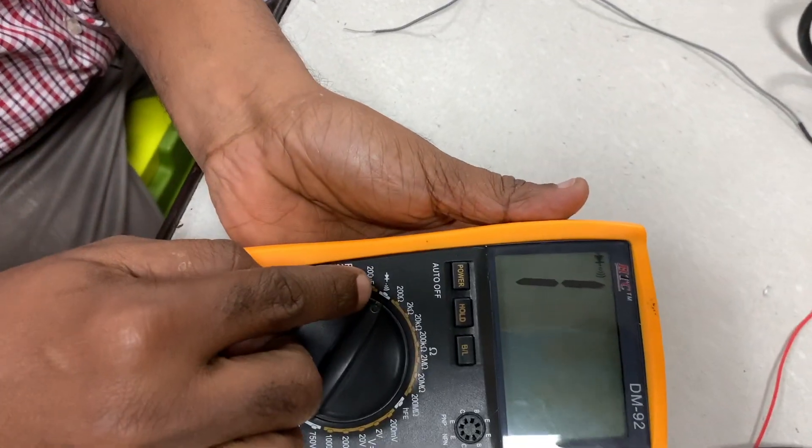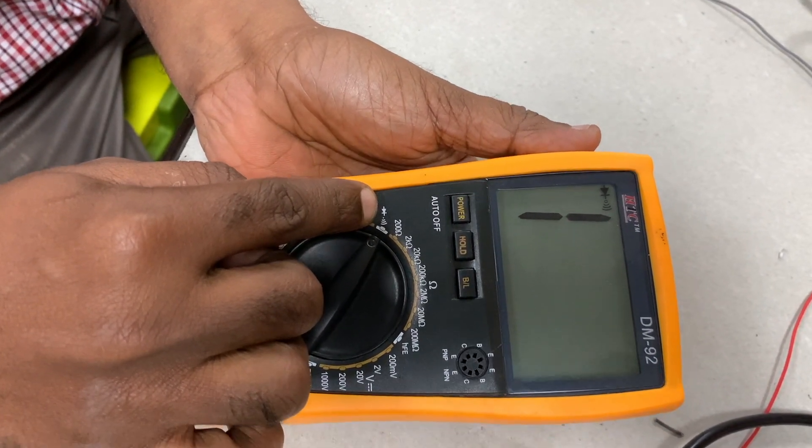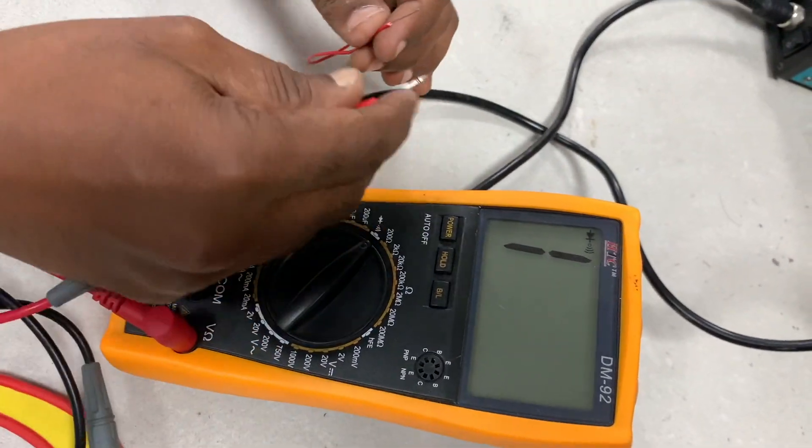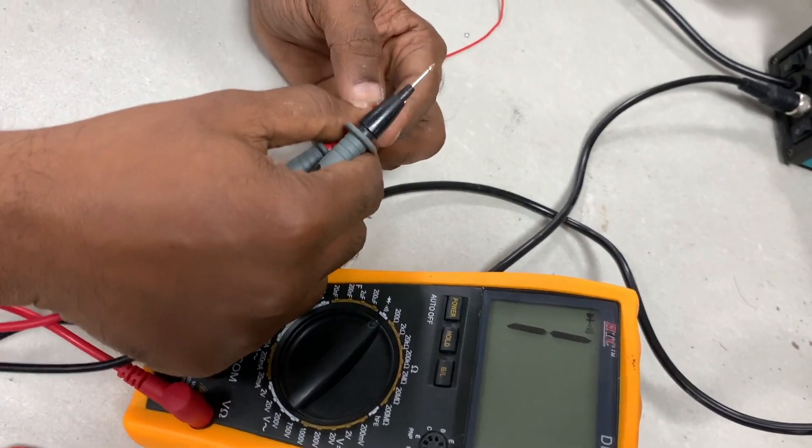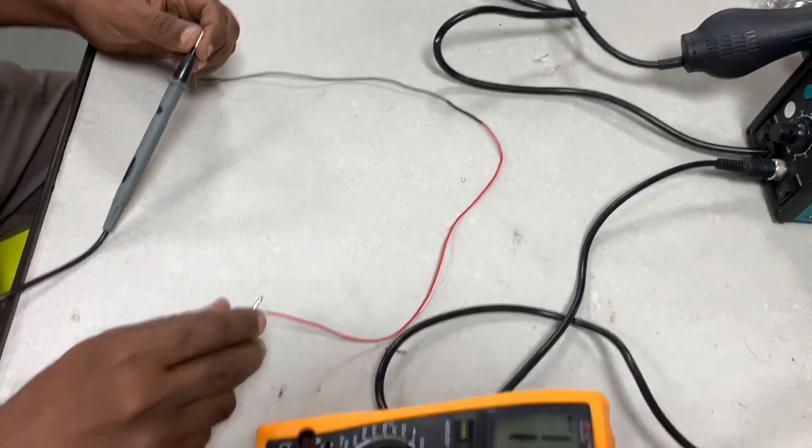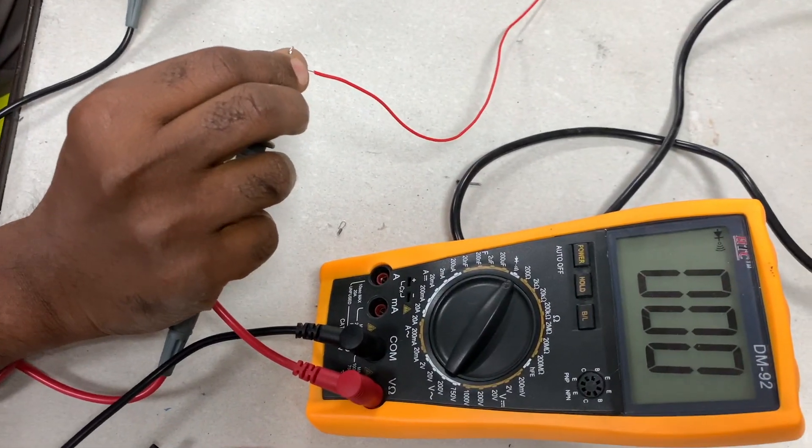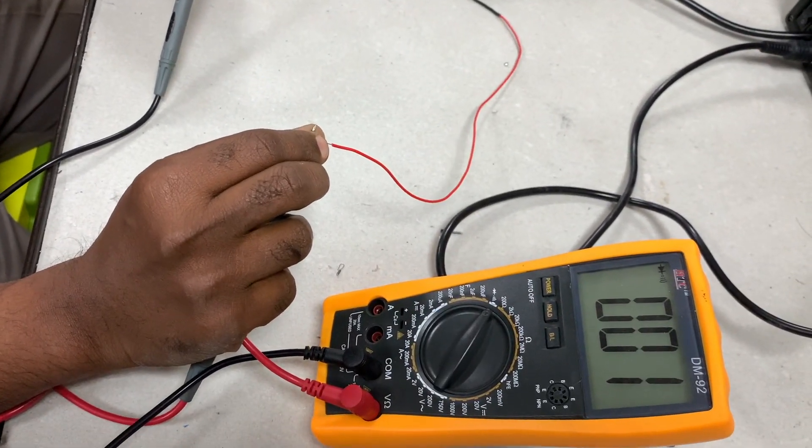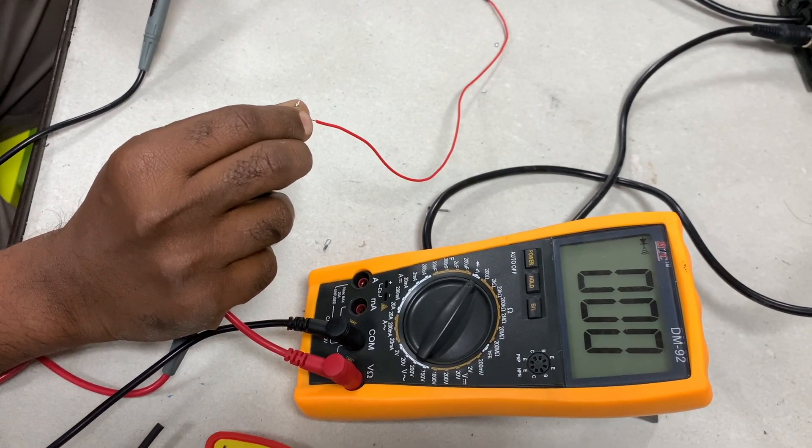I am going to put the multimeter, power it on and put it in the continuity diode mode. It has to make sound in case this is continuous. So one probe, I touch it here. Another probe, I touch here. So you can hear the sound. It means that the joint has been made. And well, it's now a single strand of wire instead of two separate pieces.